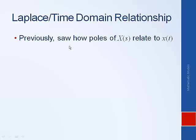And so one example that we've already saw is that the poles of X(s) relate to x(t). If you recall, poles are solutions of the denominator being equal to zero. And the real part of the pole tells us the rate of decay or growth. And the imaginary part of the pole tells us the frequency of oscillation. So that's something we've already learned.